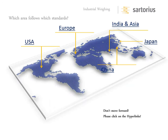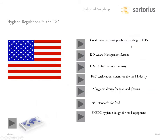We have Good Manufacturing Practices as administered by the Food and Drug Administration. We have the ISO 22000 management systems, which cover accountability — sometimes called 'pasture to plate.' These are systems where quality and traceability of product are tracked end-to-end.